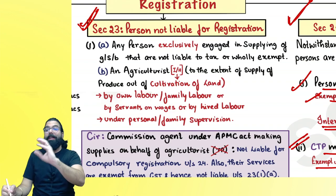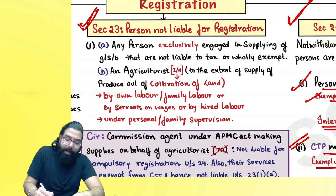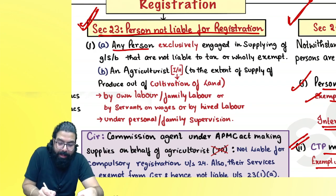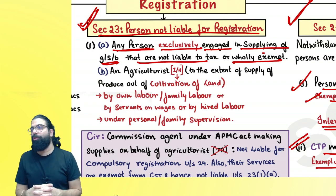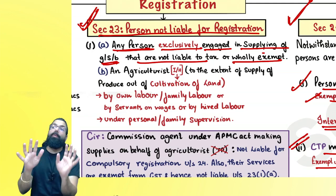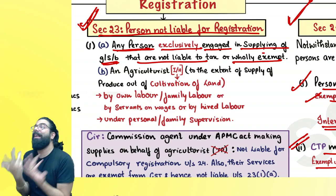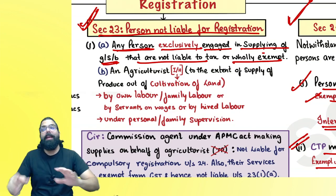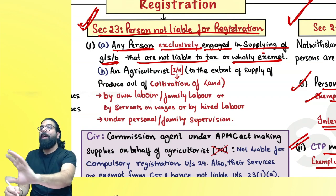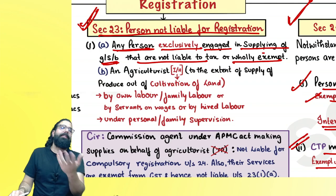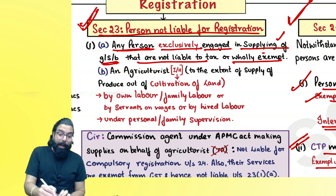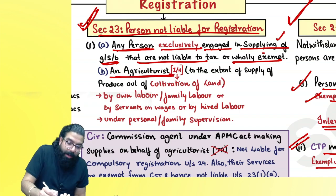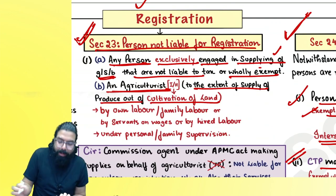Persons not liable to take registration: any person exclusively engaged in supplying goods or services that are not liable to tax or are wholly exempt. If I am supplying only exempted or nil-rated goods, why would I take registration? Even if my turnover crosses ₹20 lakh or ₹10 lakh, I am not required to take any registration because I have no tax to pay to the government.